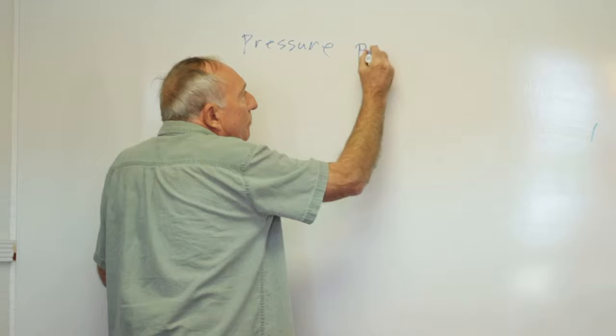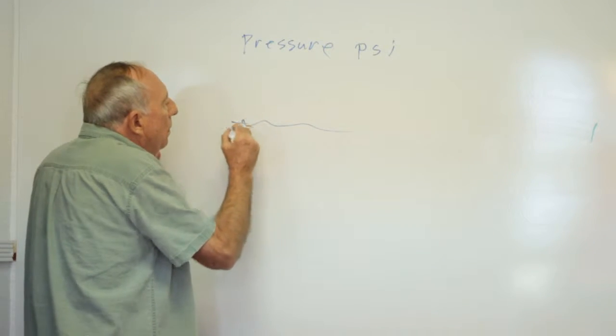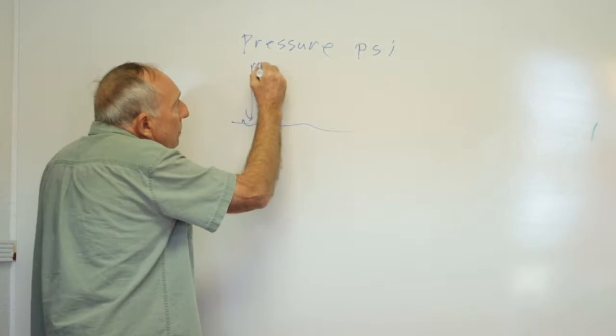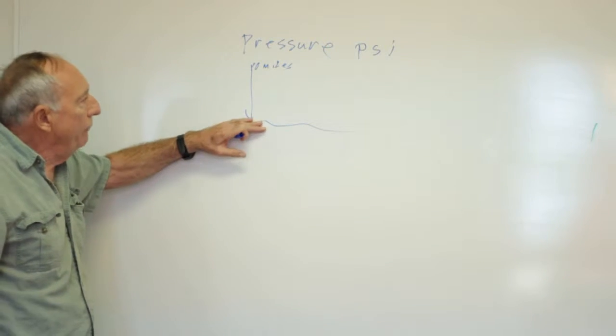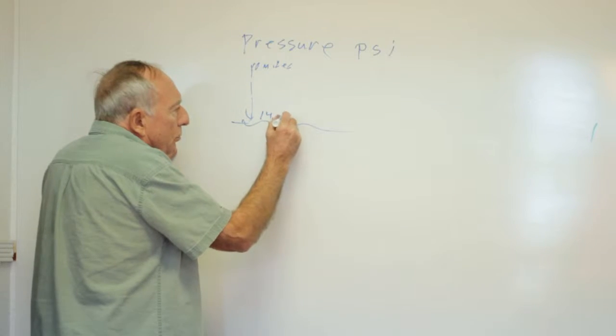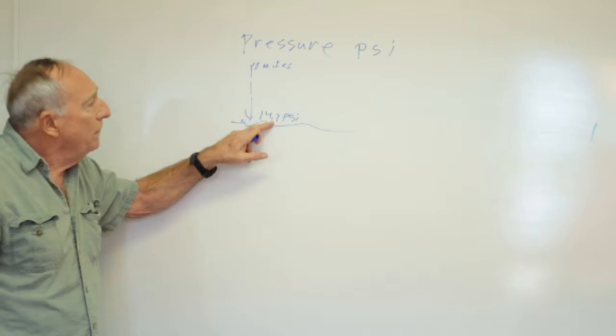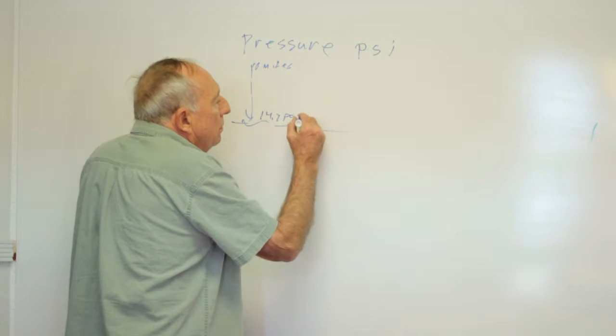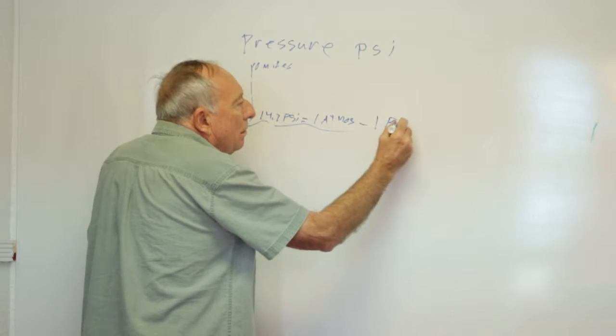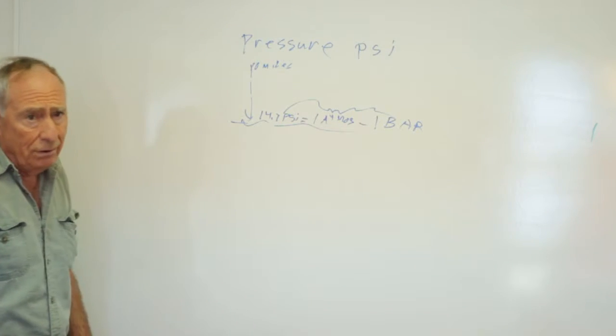Pressure is expressed as pounds per square inch, PSI. Right now at sea level, we have pressure exerted on all objects caused by about 10 miles of air stacked on top of each other. All these molecules weigh something. At the bottom, it weighs 14.7 pounds per square inch. Since this is caused by our Earth's atmosphere, we refer to this as one atmosphere of pressure. Sometimes you see it as one bar. They all mean the same thing. One atmosphere is 14.7 PSI.